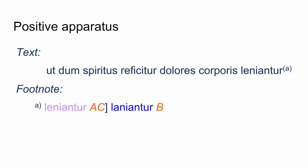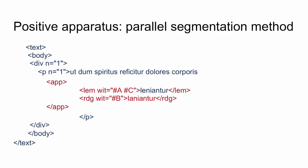This is how you could encode this positive apparatus in TEI. It's almost the same as the previous one, except that we're also using the 'with' attribute on the lemma. The 'with' attribute on the lemma has a value containing two manuscripts — A and C — just separated with a blank space.